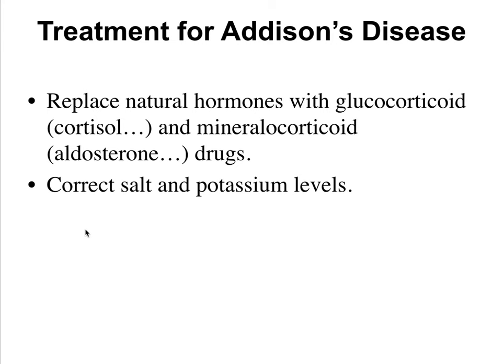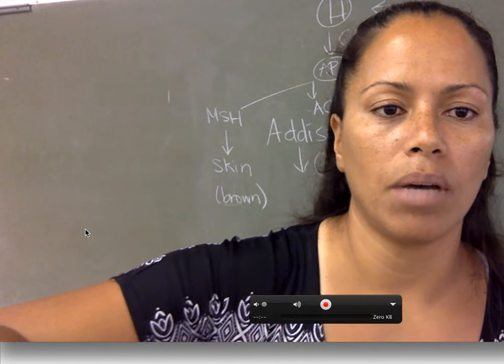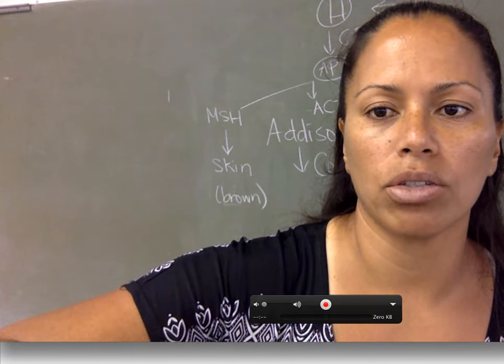Treatment for Addison's requires correcting salt and potassium levels, replacing the missing hormones - primarily cortisol - and using aldosterone drugs to manage blood pressure.